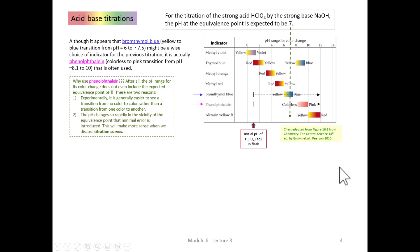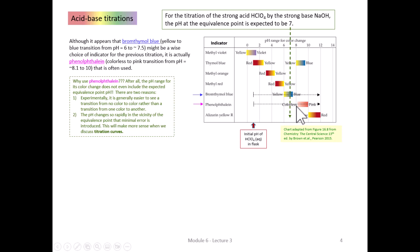We still have the issue that phenolphthalein seems out of range, but when we talk about titration curves, we'll see that near the equivalence point the pH changes very rapidly. In a strong acid–strong base titration, the pH can change by several pH units with just half a drop, so the color change happens so fast that there's very little titration error in measuring the volume of titrant added.